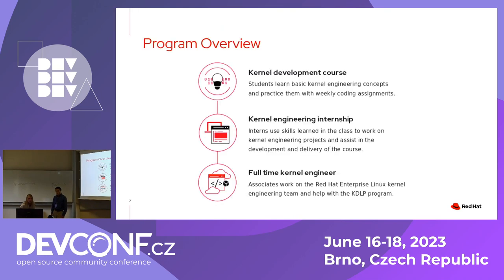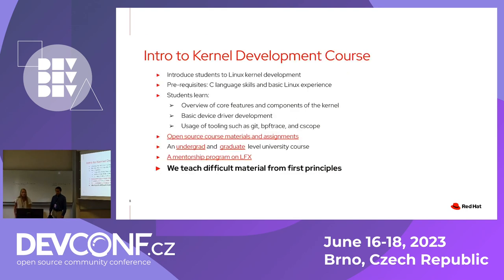Our solution was to create qualified candidates for kernel engineering. There are three main pillars to the program: the course, the internship, and full-time work. Students will learn concepts in the course and practice them with weekly assignments similar to what they'd be doing full-time at a company. Depending on how the class goes, they could get an internship at Red Hat interning on kernel, using all the skills they learned in class. And depending on how that goes, they could become full-time kernel engineers at Red Hat.